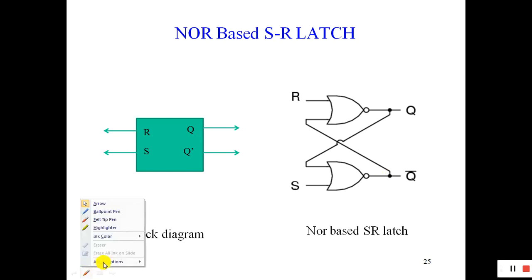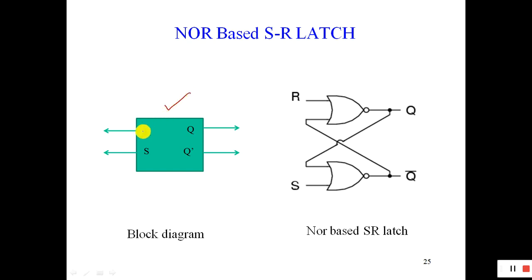This is the block diagram of the SR, or RS latch. These are the inputs — R and S — and these are the outputs Q and Q bar. This is a sequential circuit. In a sequential circuit, the output depends on the present input as well as the past output. So part of the output is fed back to the input. In that category we discuss the NAND-based SR latch, and here we will see the NOR-based latch.